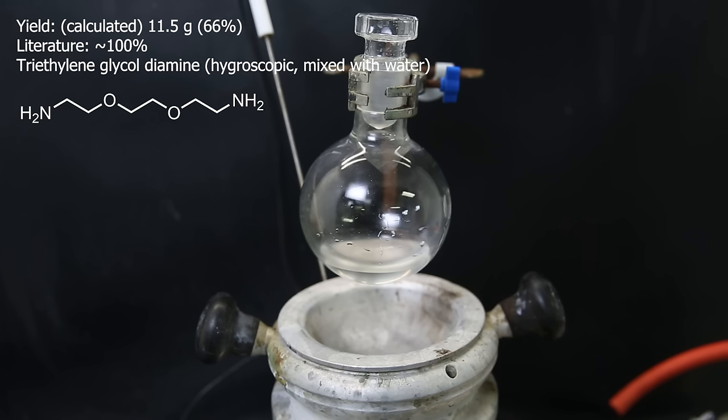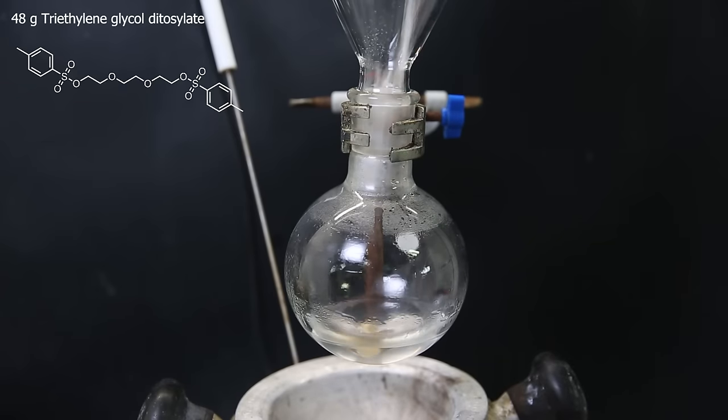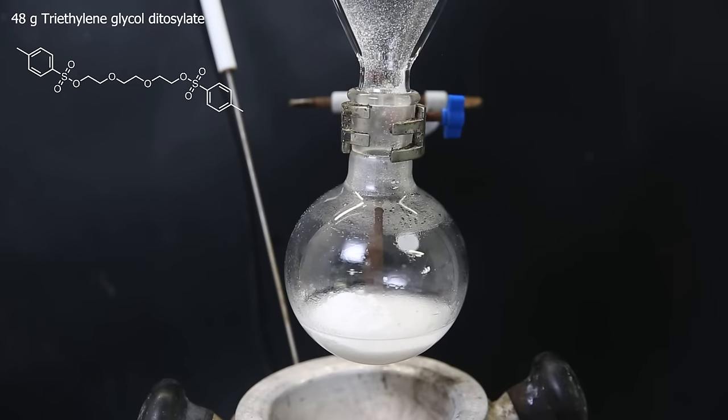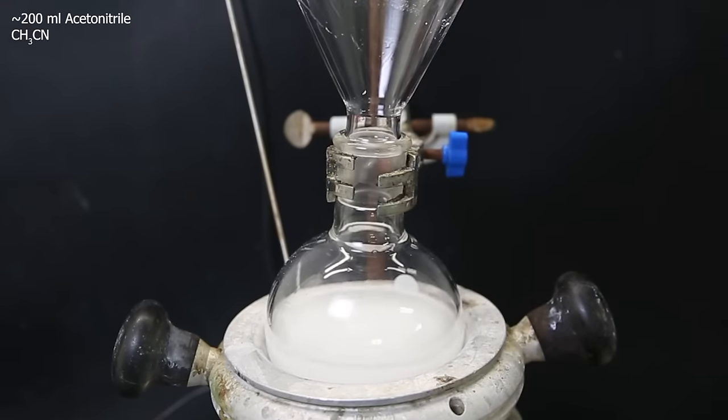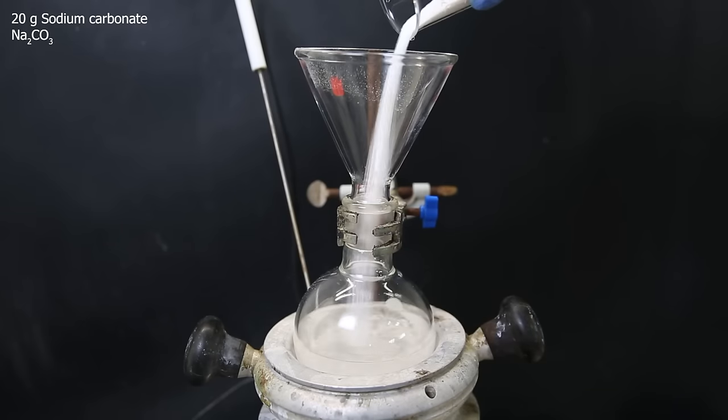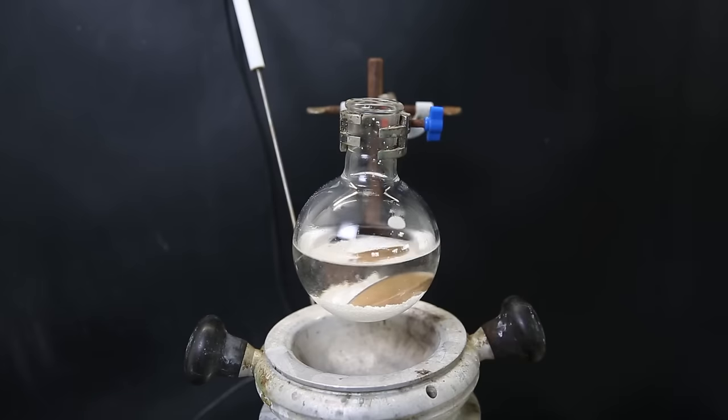Now that the synthesis of the amine is finished, I can move on to making 222-cryptand. So to the amine, I add 48 grams of the ditosylate that I saved from before, and then dissolved it in about 200 mils of acetonitrile, and add about 20 grams of sodium carbonate as a base.